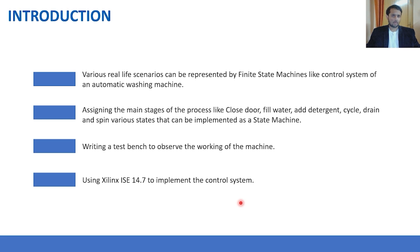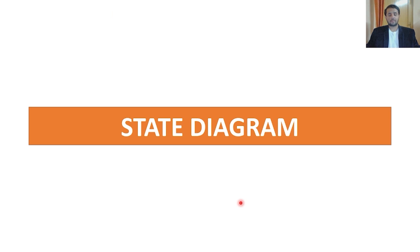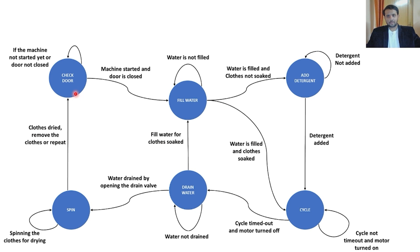For example, the vending machine, the automatic washing machine, and the traffic light control system are all examples of finite state machines. We have assigned the main stages of the process — closed door, fill water, add detergent, cycle, drain, and spin — as various states implemented as a state machine. We have written the code and the test bench to observe the working of the machine using Xilinx ISE 14.7.